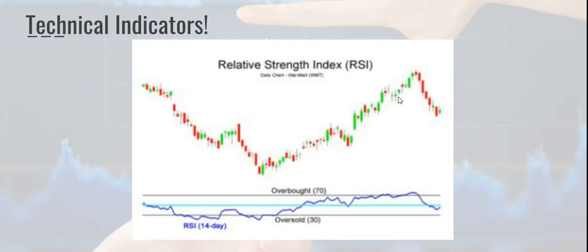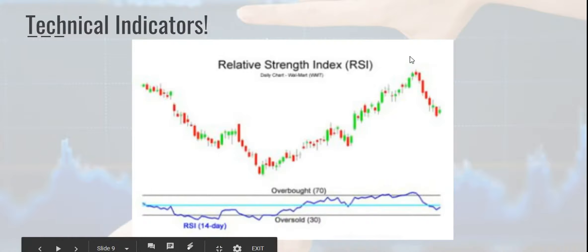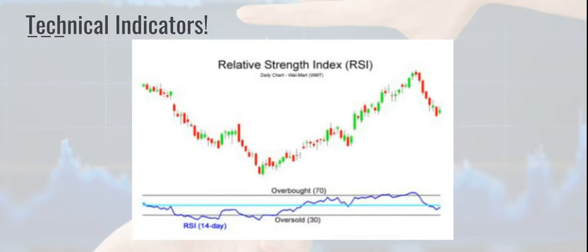Then we have the Relative Strength Index, or RSI. It is a momentum indicator and falls under the category of oscillators, as it flows up and down between upper and lower bounds. It compares recent gains and losses to measure the speed of the trend — not just the movement but also the speed. It identifies overbought and oversold conditions. However, certain large price movements may also lead to false signals, so make sure to combine it with other technical indicators to verify.